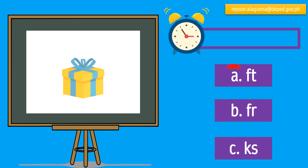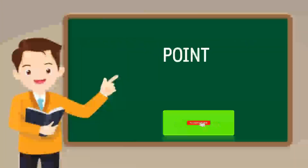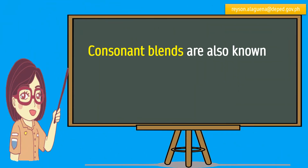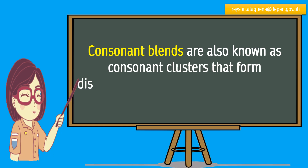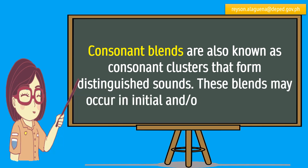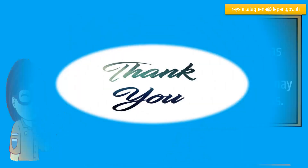The correct answer is A. Points to remember: Consonant blends are also known as consonant clusters that form distinguished sounds. These blends may occur in initial and/or final positions. Thank you for watching. Till our next English lesson, goodbye!